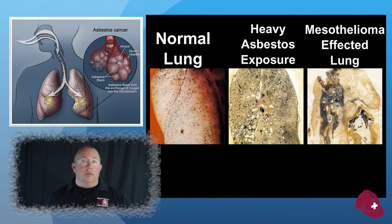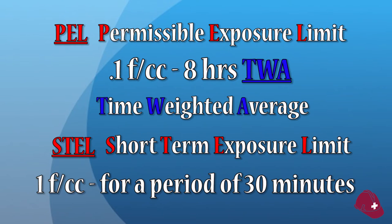Employers must use reliable historical data or air monitoring results to determine workers' exposure levels. The PEL, or Permissible Exposure Limit for asbestos, is 0.1 fibers per cubic centimeter of air over an 8-hour time-weighted average. The STEL, Short-Term Exposure Limit, is 1 fiber per cubic centimeter for a period of 30 minutes.